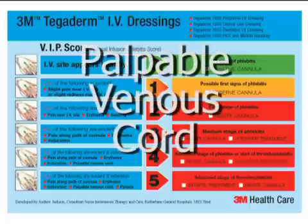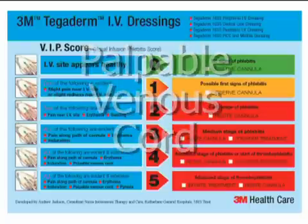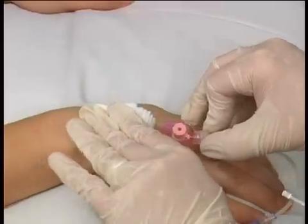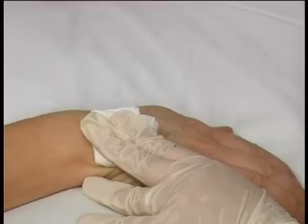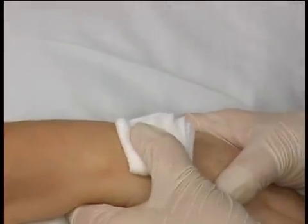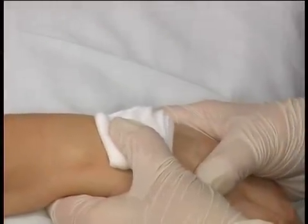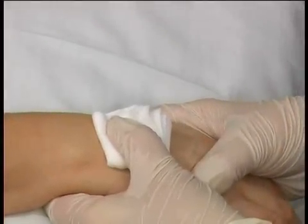A palpable venous chord is hardening of the vein which can be felt along its length. It is important that cannulae are removed at the earliest confirmed signs of phlebitis so that advanced signs are not seen. Therefore, when you check cannula sites and the patient has a VIP score of two, the cannula must be removed and replaced. If you suspect an infection at the cannula site, the cannula must be removed, a swab taken of the site, and advice sought.